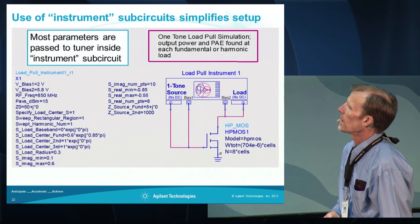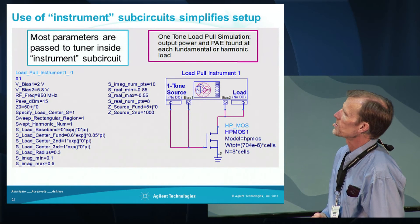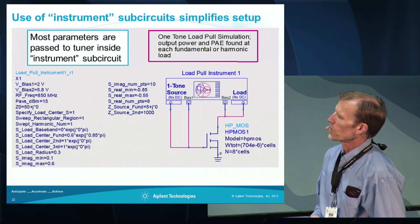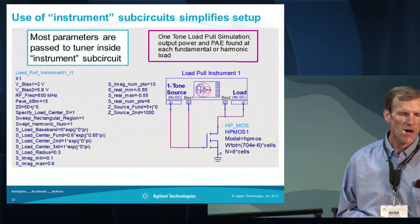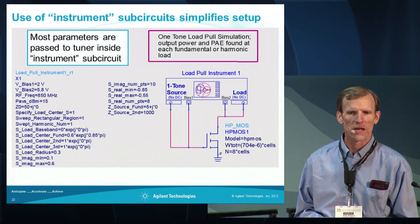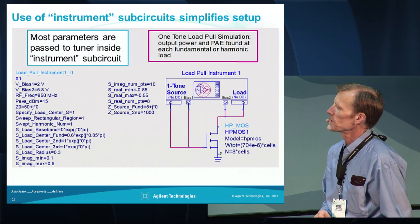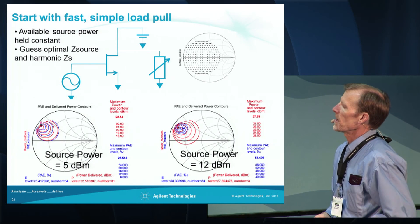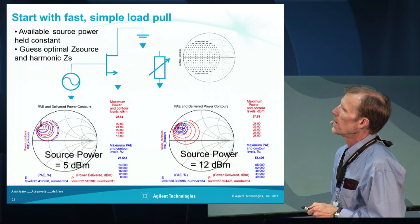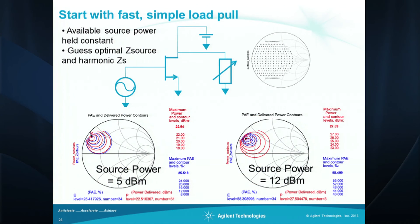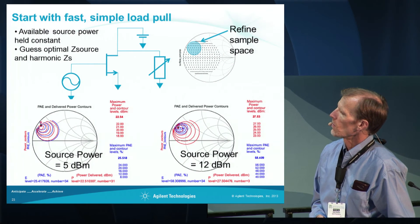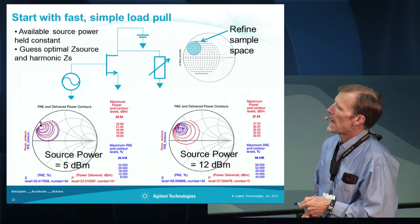This is the simplest setup. I have a load-pull instrument which has a tuner that allows you to sweep the load in either a circular or a rectangular region of the Smith chart. You can specify the loads at the fundamental and harmonic frequencies to be independent of each other, and you can sweep the load at the fundamental or at one of the harmonic frequencies. From the first simulation, we fix the available source power, guess the optimal source impedance, and make guesses at the impedances at the harmonic frequencies. We run a load-pull over a large region of the Smith chart, and looking at the contours, we can see that the optimal region is over here and refine the region we're simulating over.